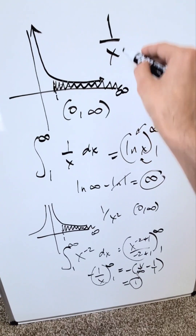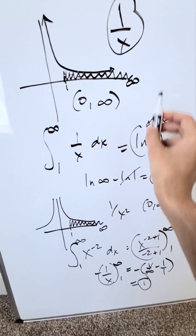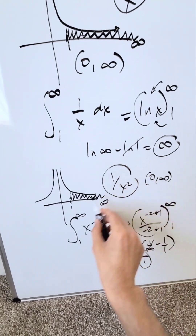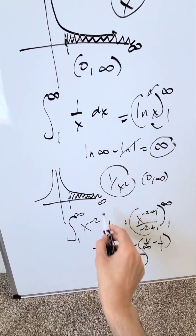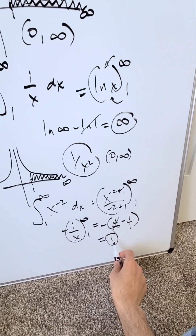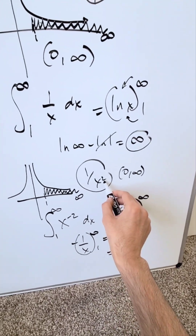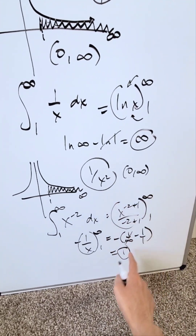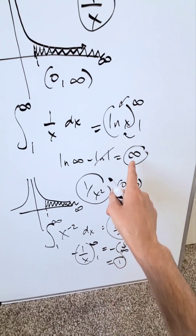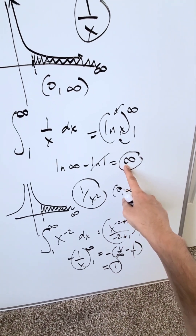So when looking at 1/x, the area from 1 up to infinity was infinite. But when looking at 1/x², the area from 1 up to infinity equals 1 — a very finite value. The exponent made all the difference in terms of the convergence seen with 1/x² and the divergence seen with 1/x.